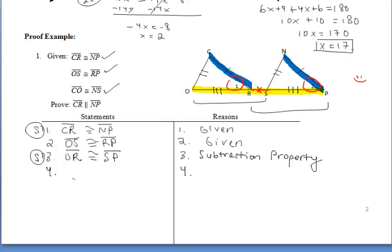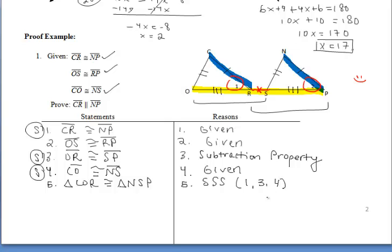For our third given, CO is congruent to NS. That gives us another pair of congruent sides, which then allows us to say that those two triangles, COR and triangle NSP, are congruent by side, side, side. We mentioned our first pair of congruent sides in step one, our second pair in step three, and our third pair in step four.